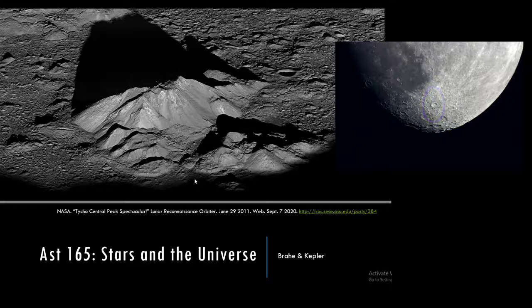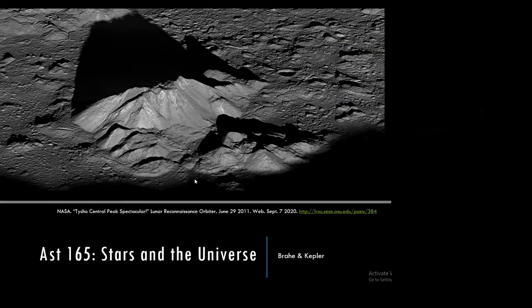A lot of lunar features are named after famous scientists and astronomers — for example, Copernicus Crater, Tycho Crater, etc. This image was taken by the Lunar Reconnaissance Orbiter, sometimes abbreviated LRO. A lot of its images can be found on NASA's website, available for free, because public money has gone into developing the programs.